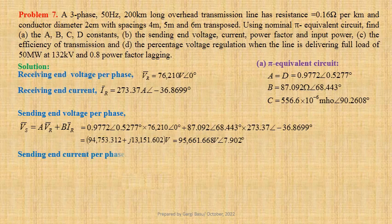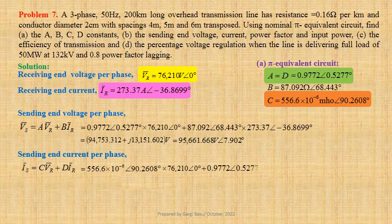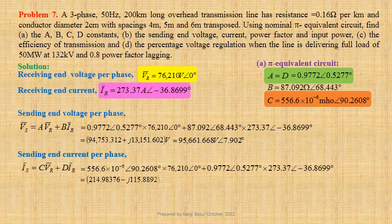Now we shall calculate sending end current per phase: IS equals to C × VR + D × IR. Using values: 556.6 × 10⁻⁶ at angle 90.2608° × 76,210 at angle 0°, plus 0.9772 at angle 0.5277° × 273.37 at angle −36.8699°. That gives us 214.98376 − j115.8892 amperes, or in polar form 244.23 amperes at angle −28.3273°.